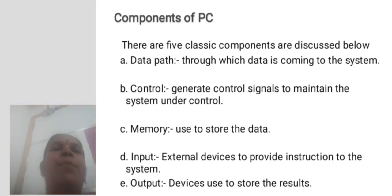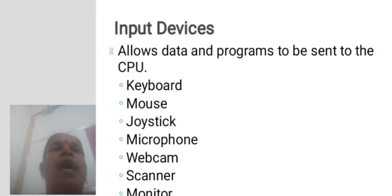Component of PC: There are five classical components discussed below. Data path - through which data is coming to the system. Control - generates control signals to maintain the system under control. Memory - used to store data. Input - external device to provide instruction to the system. Output device - used to store the result.